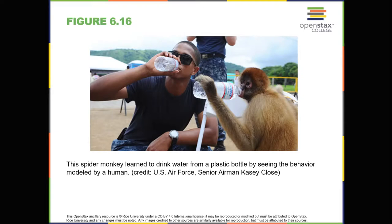Previous sections of this chapter focused on classical and operant conditioning, which are forms of associative learning. In observational learning, we learn by watching others and then imitating or modeling what they do or say. The individuals performing the imitated behavior are called models. Research suggests that this imitative learning involves a specific type of neuron called a mirror neuron.